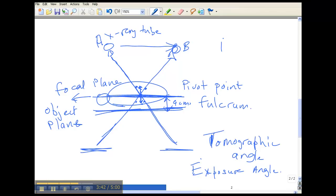Well the tomographic angle is the angle made by the tube as it rotates from its starting position where it's stationary to the end position where it's stationary. The x-ray exposure itself, the x-rays do not come on immediately.